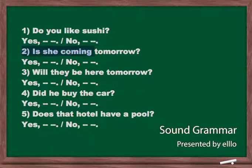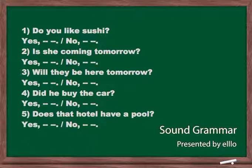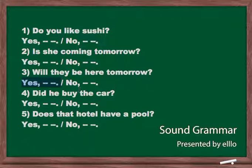Number two: Is she coming tomorrow? Yes, she is. No, she isn't. Number three: Will they be here tomorrow? Yes, they will. No, they won't.